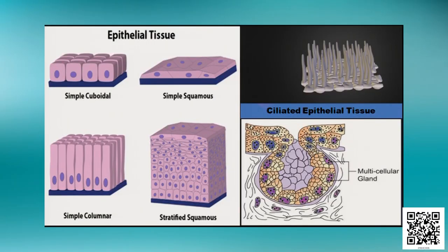Epithelial tissues are of six types: simple cuboidal, simple squamous, simple columnar, stratified squamous, ciliated epithelial, and glandular epithelial. There are more types of epithelial tissue, but you need to focus on these six.